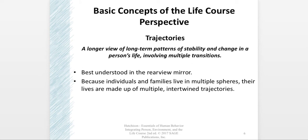Trajectories are a longer view of patterns of stability and change in a person's life that involve many different transitions. For instance, at some point in high school you decided to go to college, got your bachelor's degree, worked for a while, moved on to your master's, and then entered the work world to build your profession and join professional organizations — that is a trajectory. We have many different roles, so our life course really has multiple intertwined trajectories. Usually you can see that trajectory better in the rearview mirror than when you're in the middle of it.